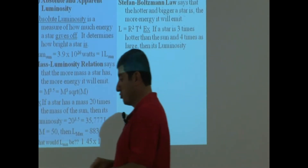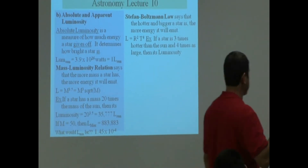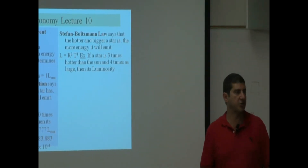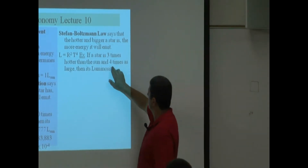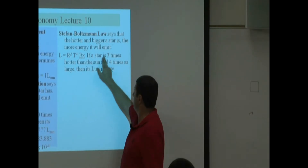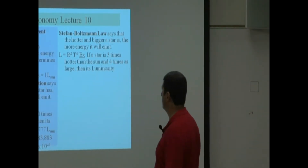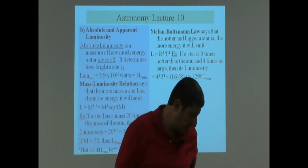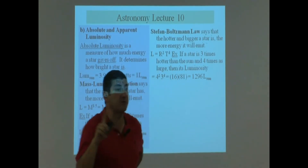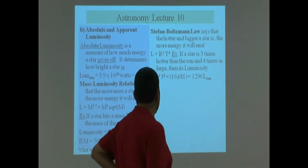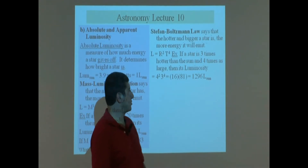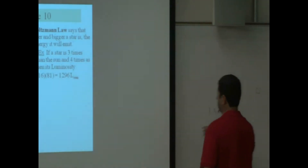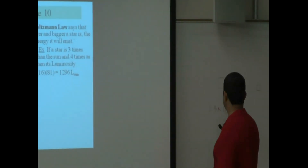So if a star is three times hotter than the sun and four times as large as the sun, how much energy is it going to emit? What's the luminosity? Four times as large means the radius is 4, three times hotter means temperature is 3. So you do 4 squared times 3 to the power of four. 4 squared is 16. 3 to the power of four doesn't mean 3 times 4; it means 3 times 3 times 3 times 3, which is 81. So 16 times 81 gives you 1,296 — or about 1.3 times 10 to the third.